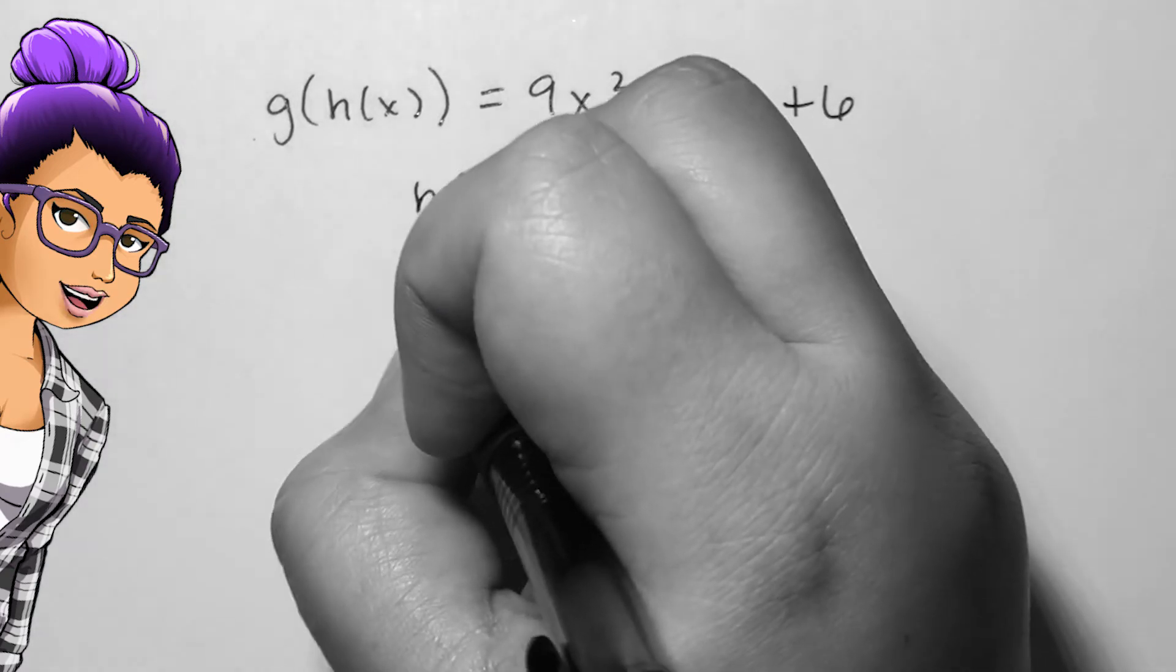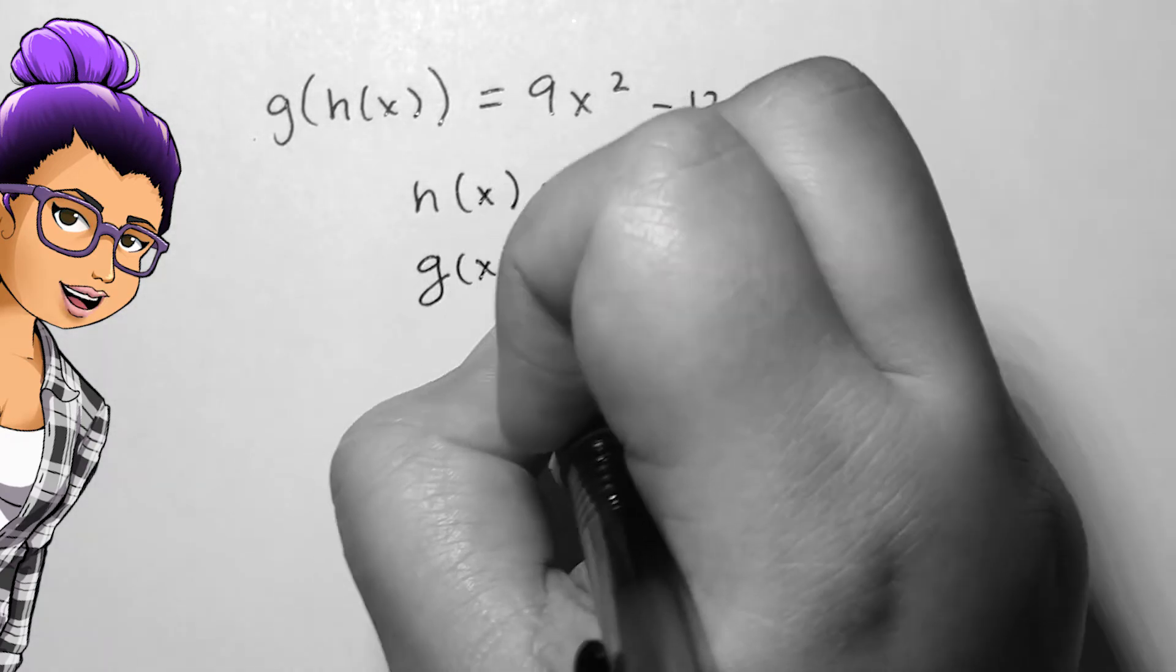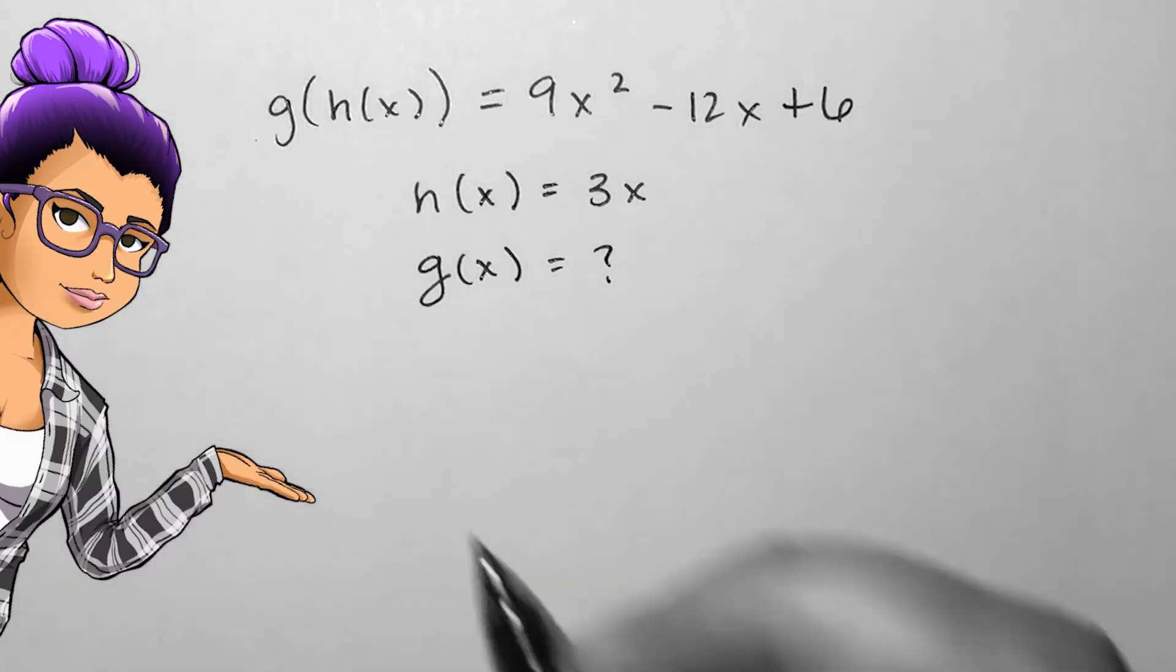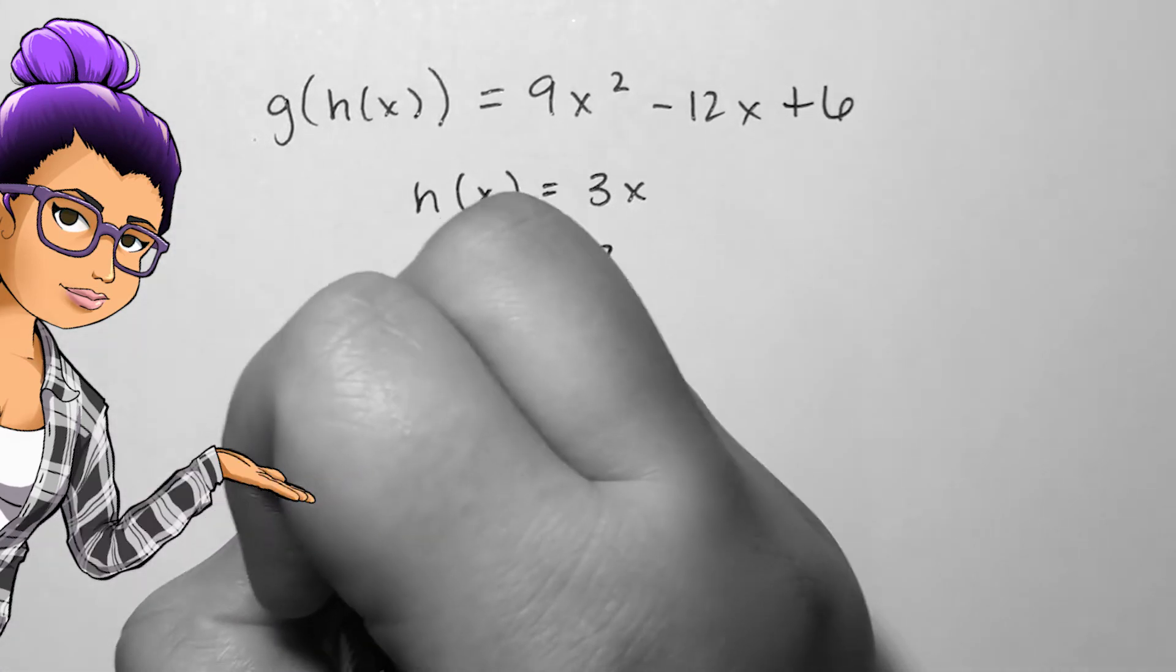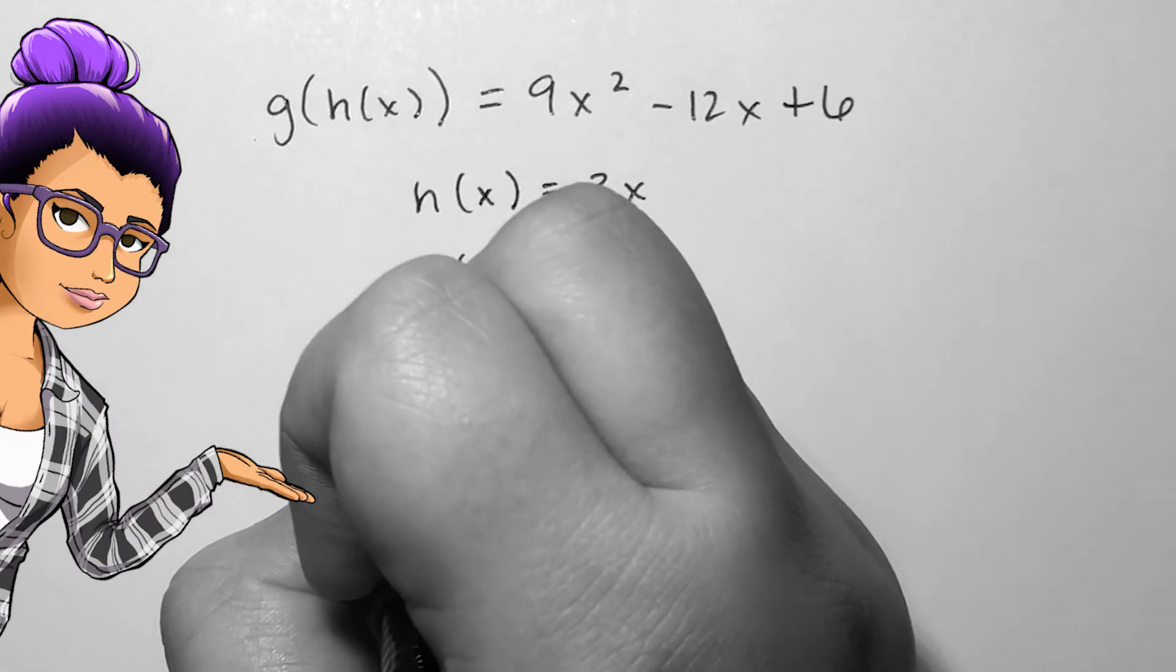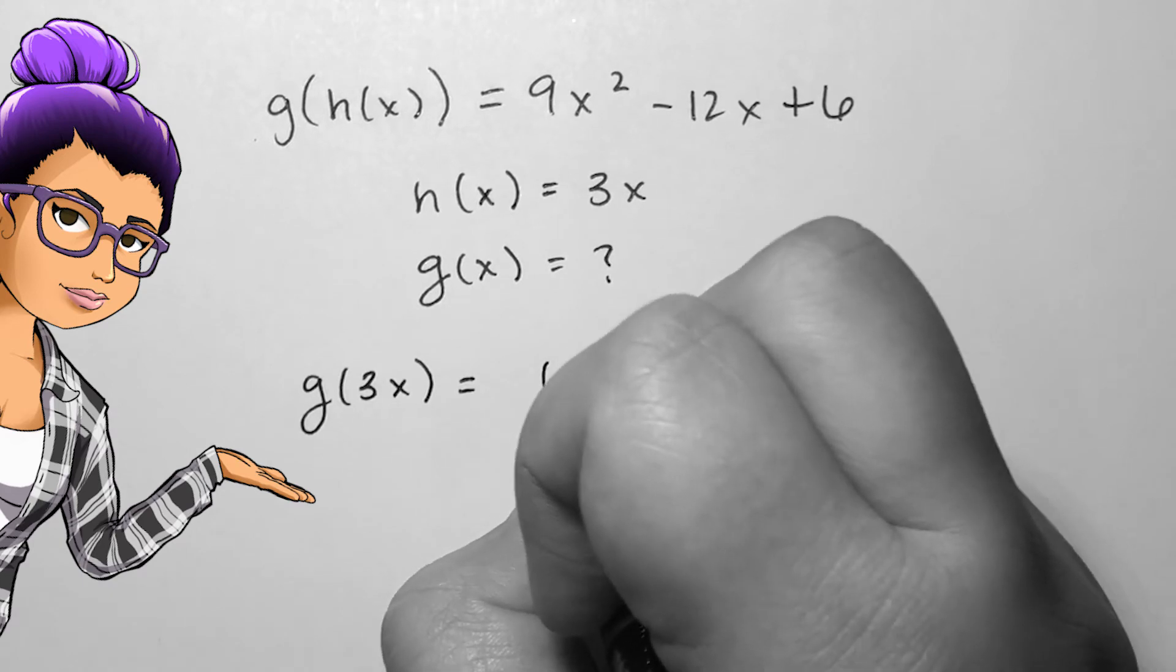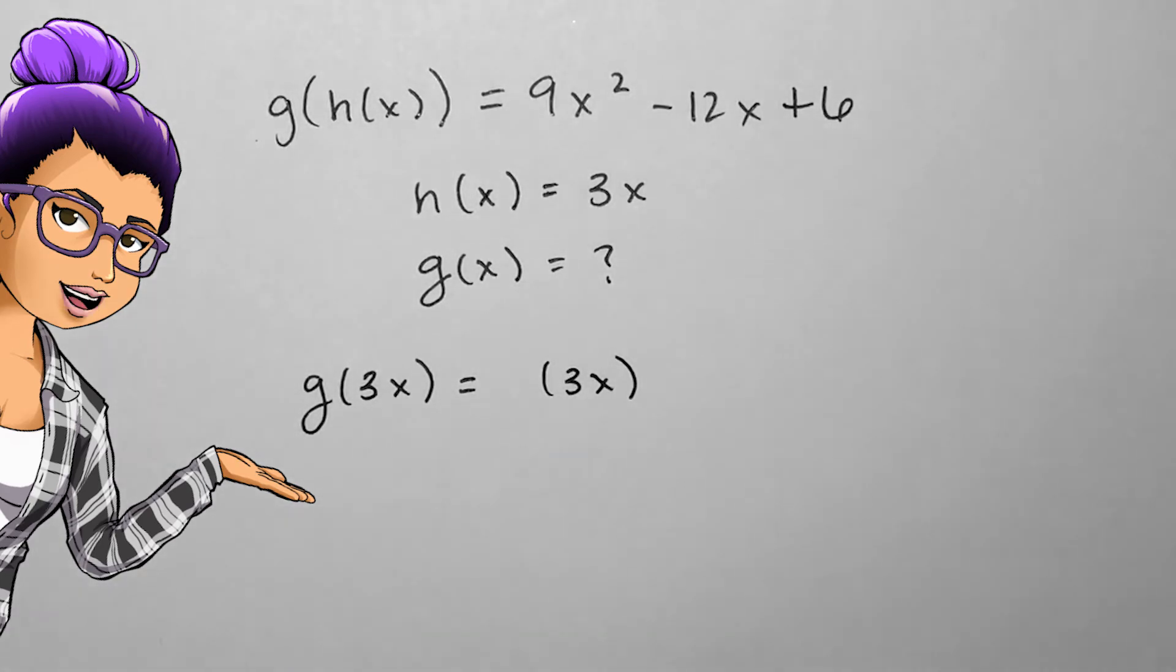We could start by rewriting g of h of x as g of 3x, notating exactly what we're looking for. In the first term, 9x squared, if I want 3x to show up but be equivalent to 9x squared, I need to square it. This means I can rewrite 9x squared as 3x squared.